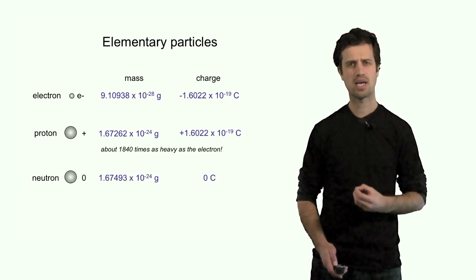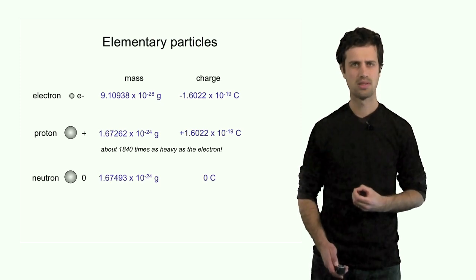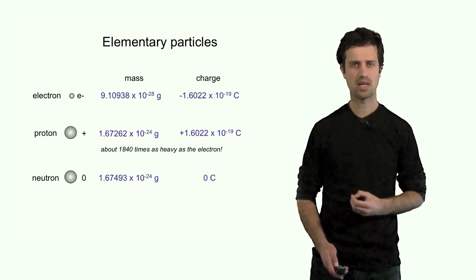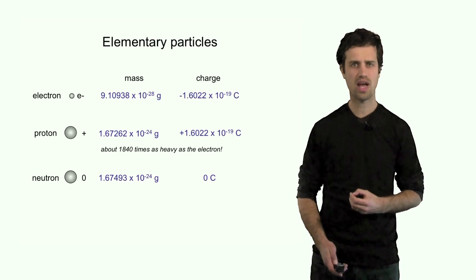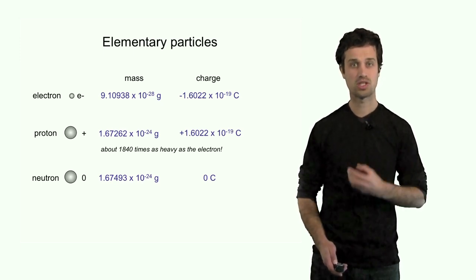The neutron is about the same size as the proton. Its mass is also 1.67 × 10⁻²⁴ grams, yet it has no charge. Its charge is 0 Coulomb.